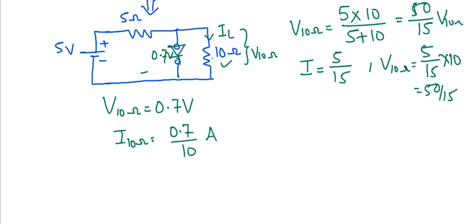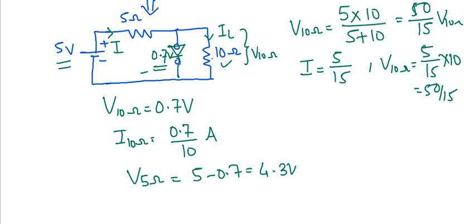Always first check whether the diode is in forward or reverse bias. For the second case, finding total current in the circuit: the diode drop is 0.7 volts and the supply is 5 volts, so the drop across the 5 ohm resistance is 5 − 0.7 = 4.3 volts. The current is therefore 4.3 / 5 amperes.